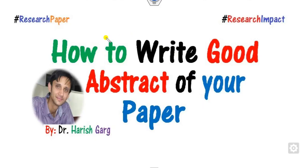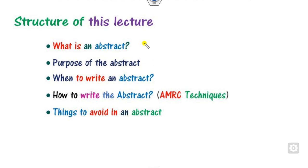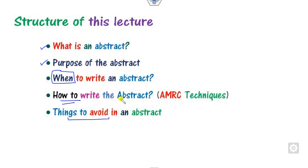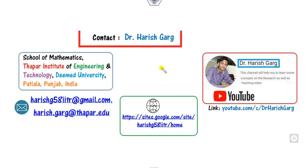Hello everyone, welcome to the next lecture on research paper writing. Today we will discuss how you can write a good abstract for your paper. The structure of this lecture is: we will see firstly what is the abstract, what is the purpose of the abstract, when you are able to write the abstract, how you can write it, and most importantly which words or things you can avoid in the abstract. I am Dr. Garg, working in the School of Mathematics, Thapar Institute.